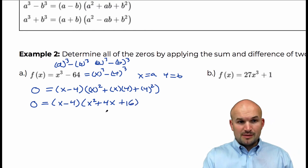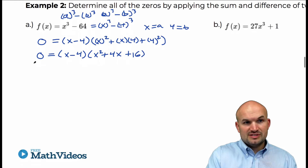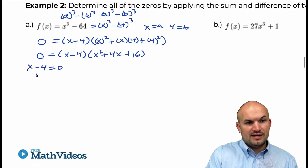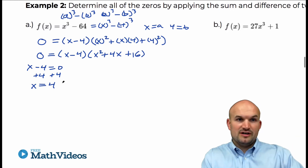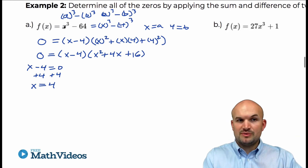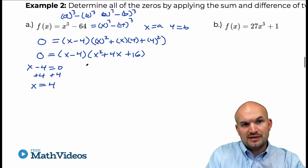If we use the zero product property, we can say x minus 4 equals 0, add 4 to both sides, and we can see that we have 1 real zero: x equals positive 4. But we know by the fundamental theorem of algebra that there are three zeros, so those other two zeros are going to be in this factor — x squared plus 4x plus 16.